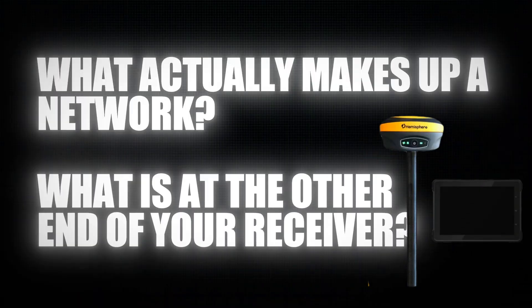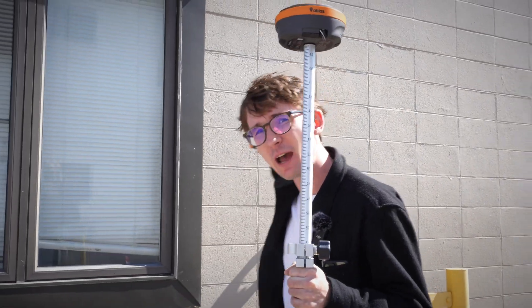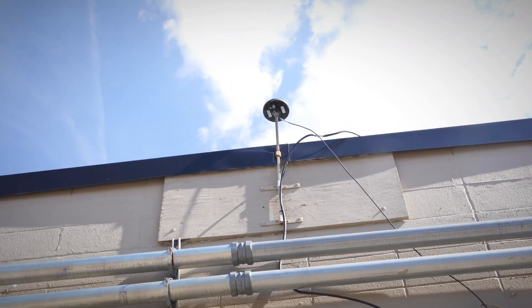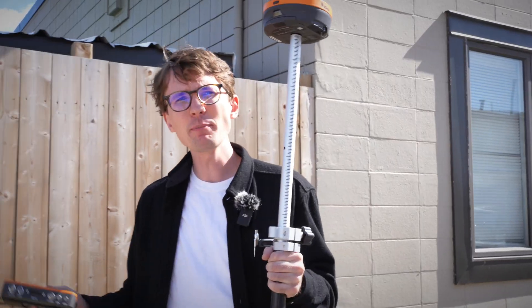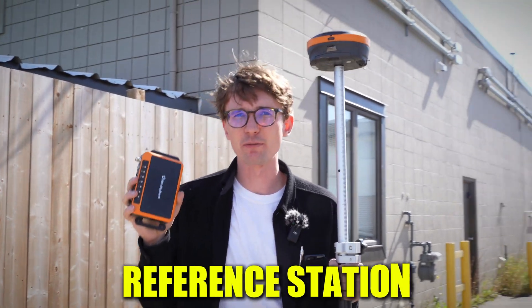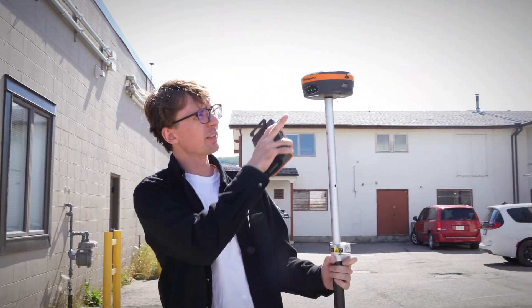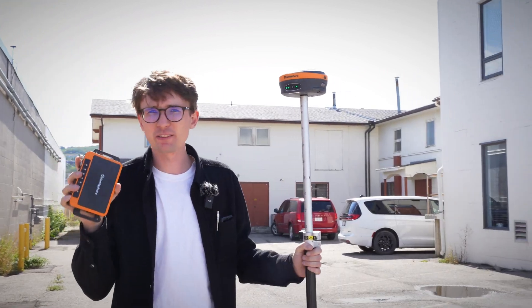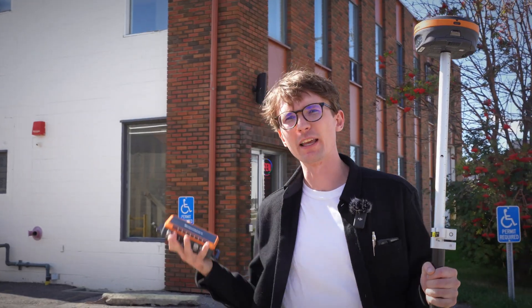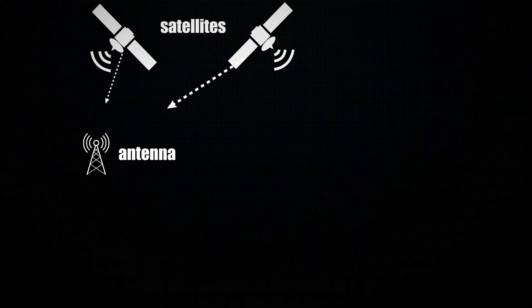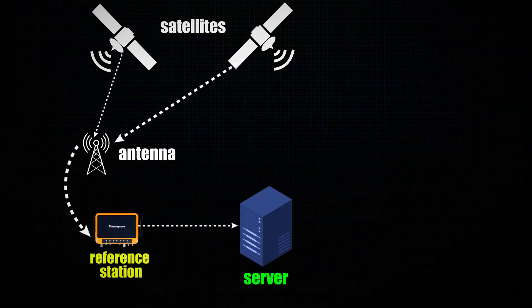So what's at the other end of your receiver? And that has to begin with the antenna. We've got an antenna — it's normally mounted on a roof, on a cell tower, somewhere where we have a nice view of the sky — and it pipes information to one of these. This is a reference station. In my case, I've got a Hemisphere R632, and all it is is a Hemisphere S631 minus the antenna and internal batteries, because it's never going to move. It's always going to be attached in the same place. We've got constant power and a connection to the internet.